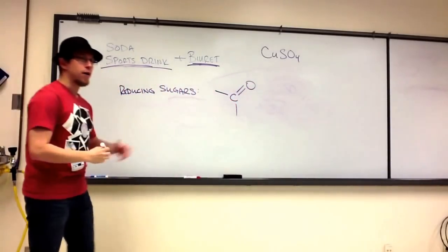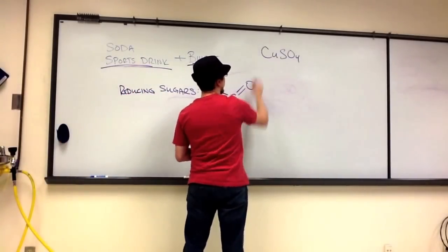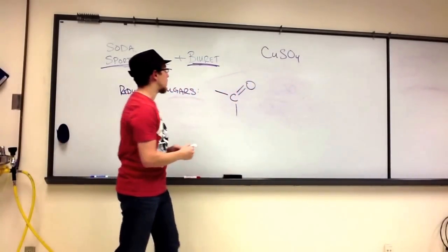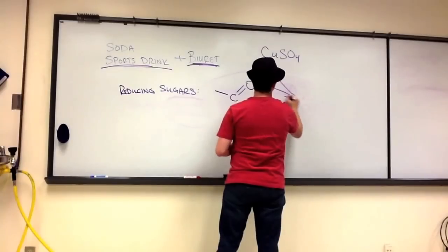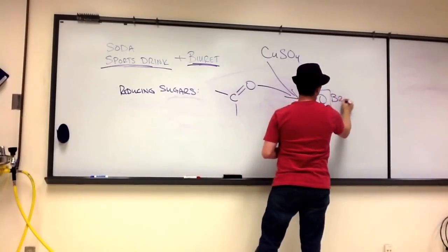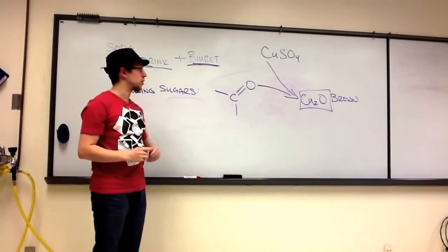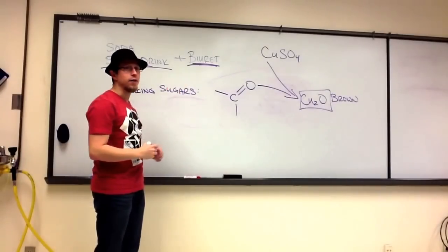When this free carbonyl group is present in the molecule, the oxygen in the carbonyl group reacts with the copper in copper sulfate to form copper oxide. And this is the brown color that you saw in your reducing sugars test. And it's potentially also what's causing the brown color in our Biuret.